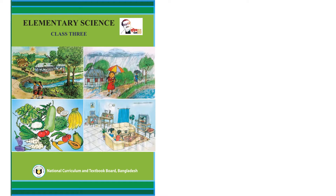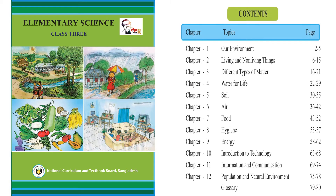This is the cover page of the book, which is known as Elementary Science Class 3. You can see there are some beautiful pictures on the front of this book, so I hope you will feel comfortable and enjoy learning science. Before we start, let me give you a summary of what you are going to read. There is a table of contents — you can see there are a total of 12 chapters.